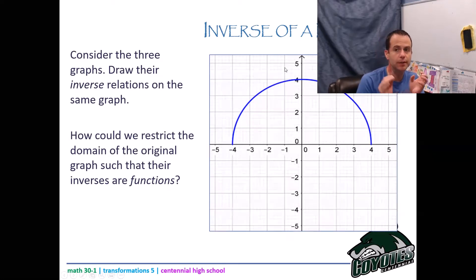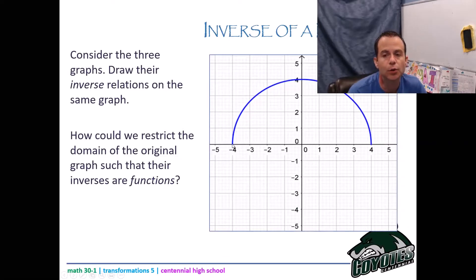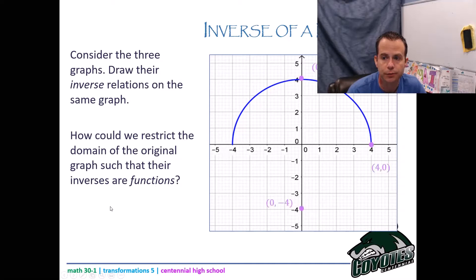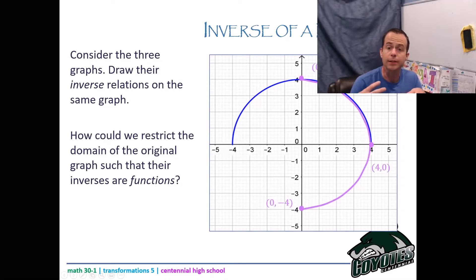First, take the original points and switch x and y coordinates to draw the inverse. The point negative 4, 0 becomes 0, negative 4. The point 0, 4 becomes 4, 0. The point 4, 0 becomes 0, 4. Plot those three and reconnect them, and you get the inverse relation. That is not a function, but if the question just said draw the inverse, that's the perfect answer.